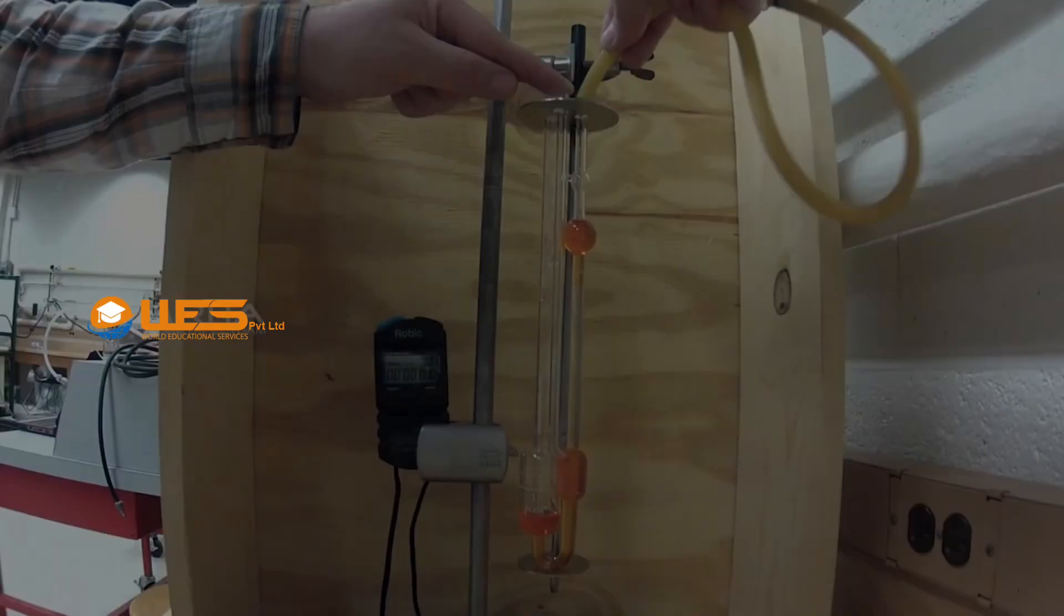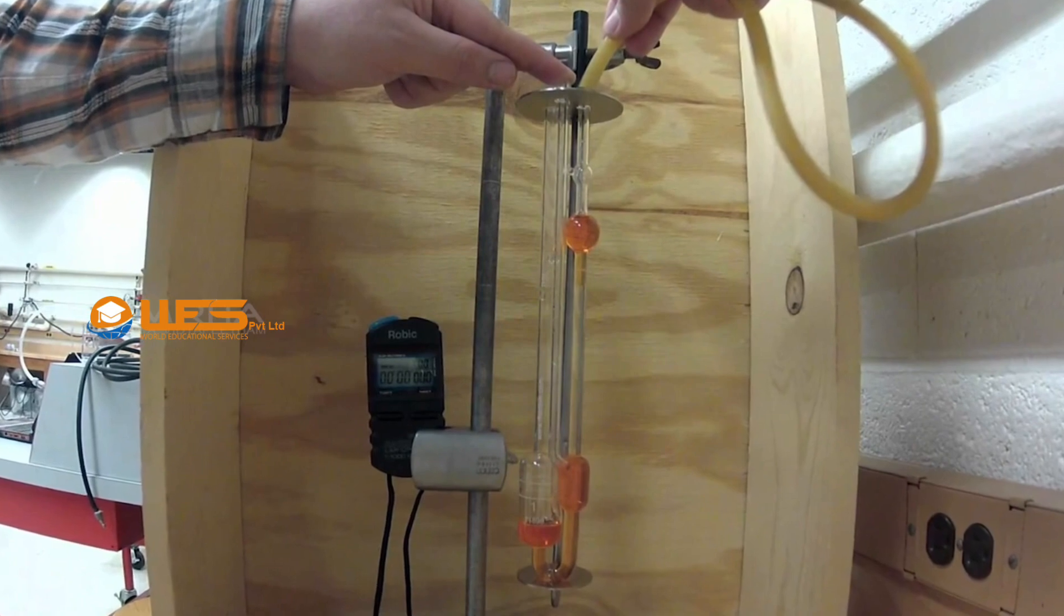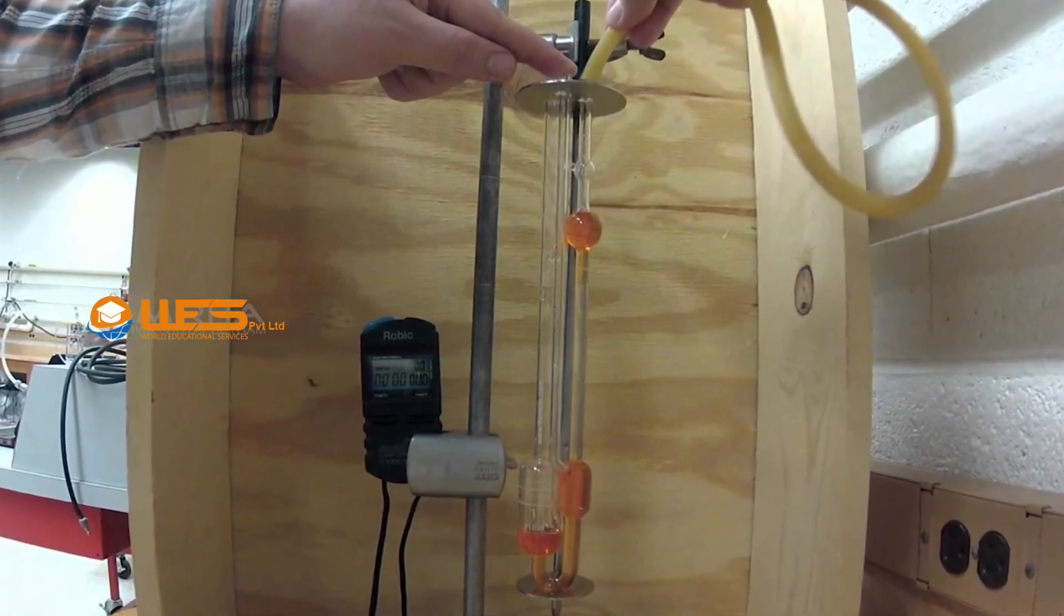Applications: Falling ball viscometers are used for measuring the coefficient of viscosity of transparent viscous fluids.